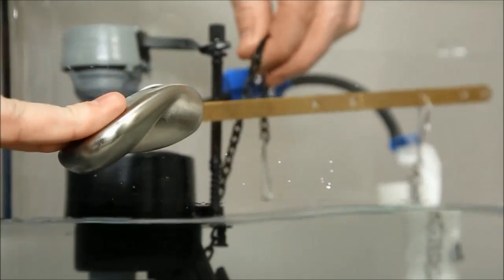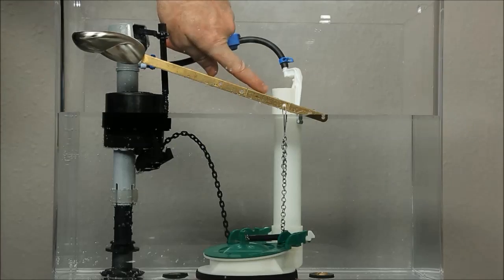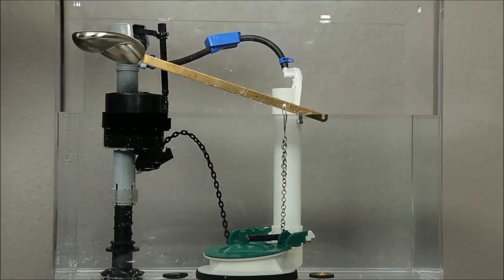Flush the toilet and let the tank refill. Set the water level one half inch below the top of the overflow pipe.